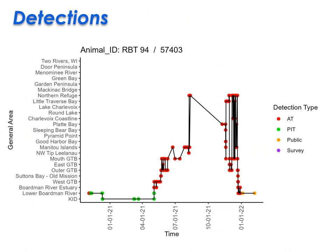Here's an example of what's known as an abacus plot or detection history. On the x-axis we have time, and on the y-axis we have categorical labels for the receivers in the network. This rainbow trout was tagged in fall 2020 and remained resident in the Boardman River Kids Creek over the winter before exiting in May 2021. It then made fairly large spatial movements out into Lake Michigan as far as the northern lake trout refuge, and made big back-and-forth movements up and down the Michigan shoreline. It returned in January 2022, was captured and released by an angler, and a few weeks later was captured and harvested by another angler. This illustrates what the raw data outputs look like as we analyze this data.